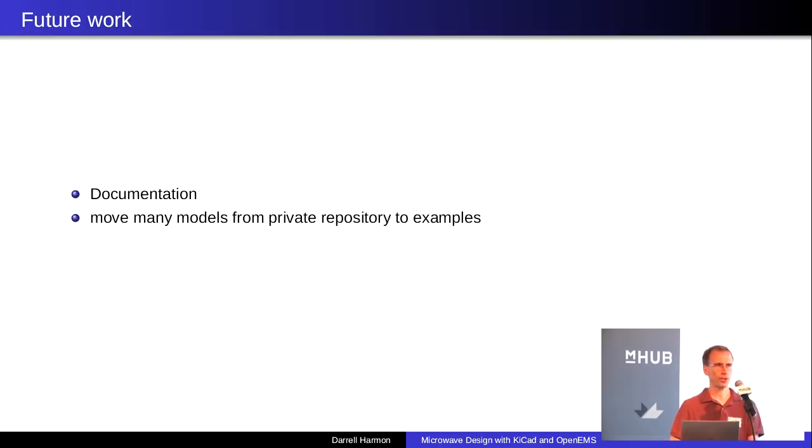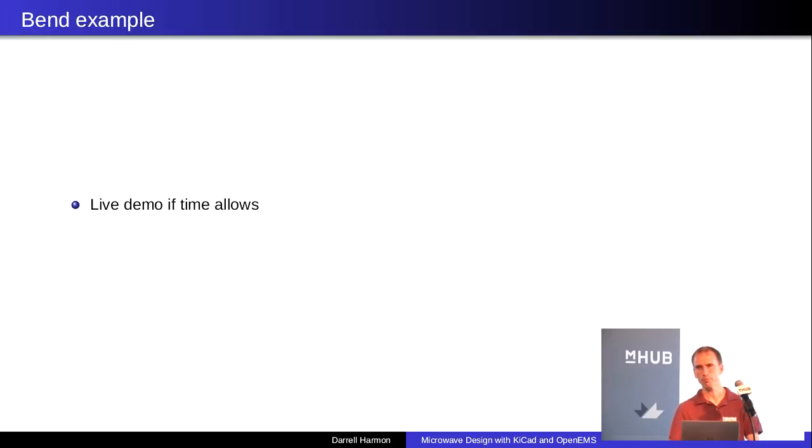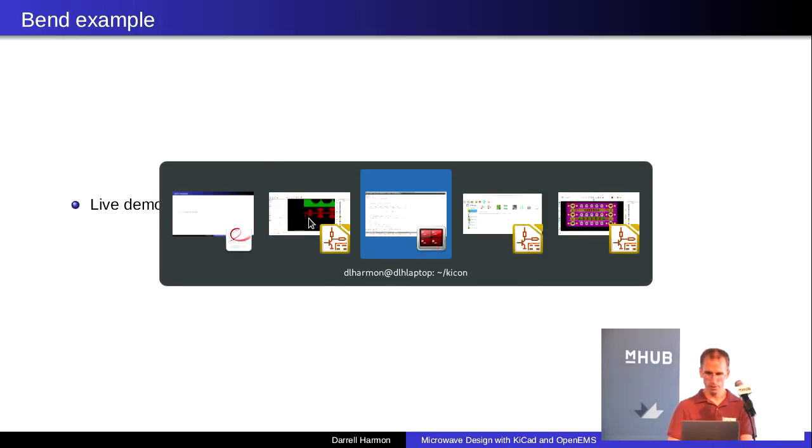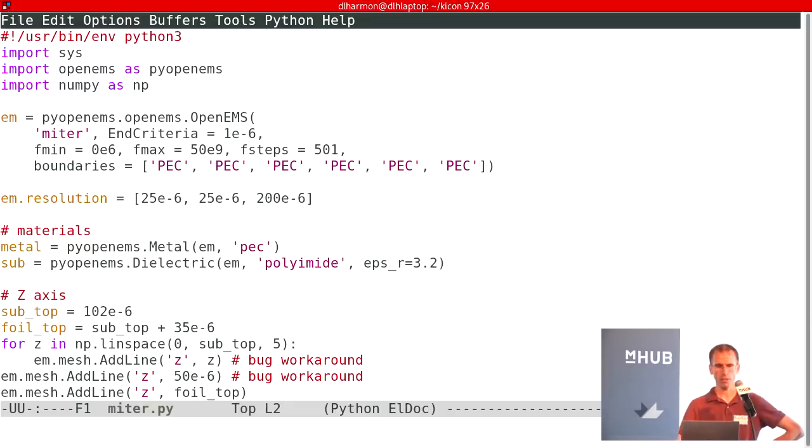Future work. It needs more documentation. So it'll be more accessible to other people. And also adding many models from a private repository that there's no reason to keep secret. All right. How are we doing on time? All right. I have a live demo of a mitered bend. This is not as complete as I'd hoped it would be. I ran into a few issues while the plan was to write this on the airplane on the way here. And it didn't go as well as I'd hoped. But anyway, you'll be able to see kind of the flow.